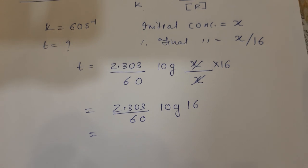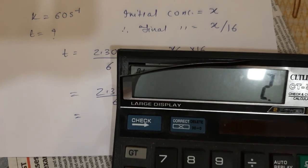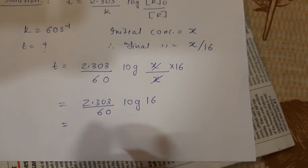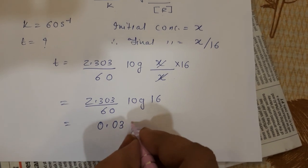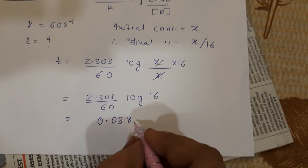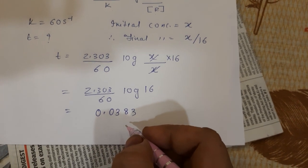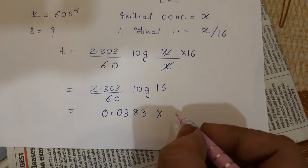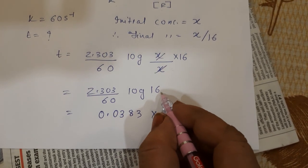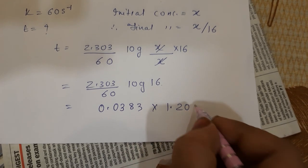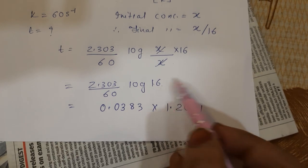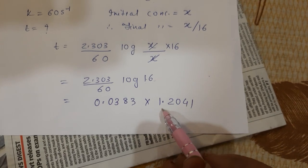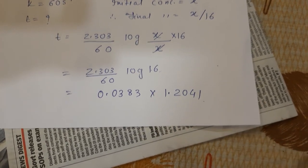Now 2.303 divided by 60 equals 0.0383, which is 0.0383 times log 16. The value is 2041, so 2 digits means 2 minus 1 is 1, so 1.2041. Let me multiply 0.0383 with 1.2041.